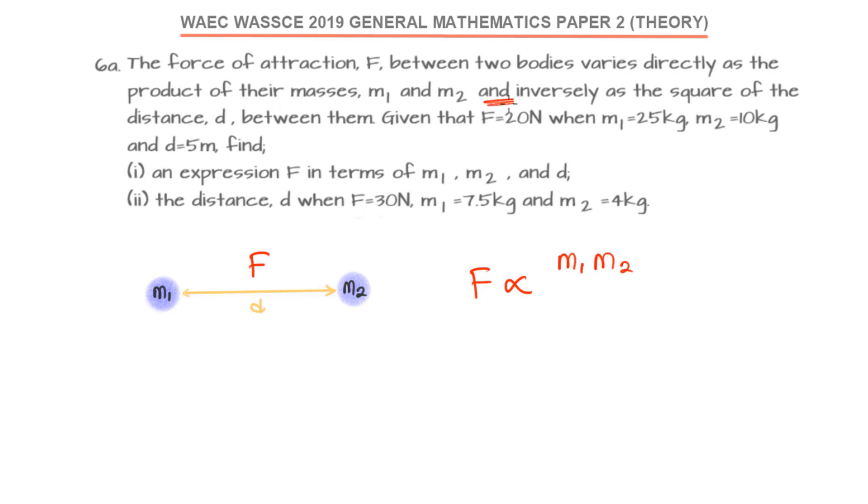Because they said 'and inversely,' that means the product is there, inversely would be 1 over. So that would be over the square of the distance D between them, D raised to power 2. So we have inversely as D raised to power 2.